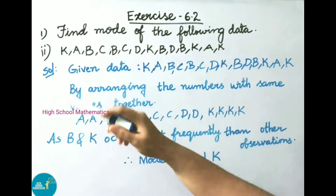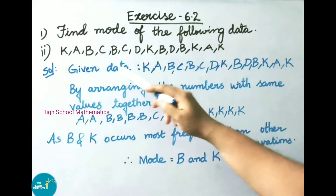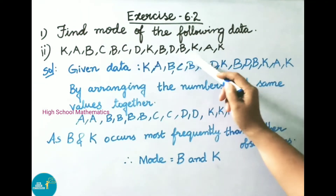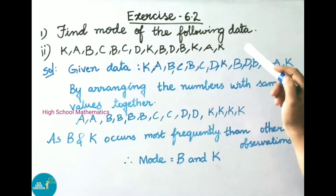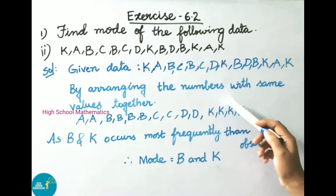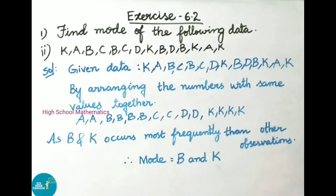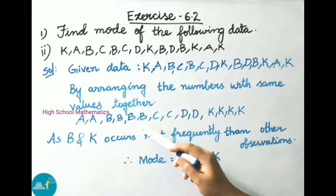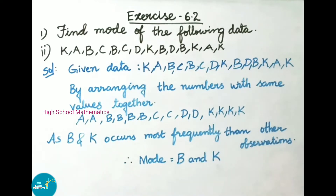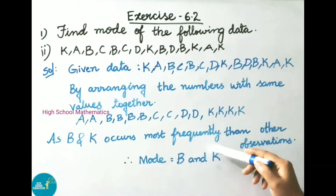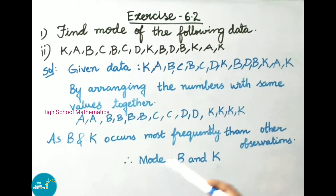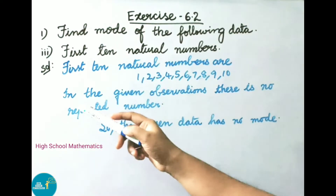Question 1, part two: Find the mode of K, A, B, C, B, C, D, K, B, D, B, K, A, K. Arranging letters of the same type together: A appears 2 times, B appears 4 times, C appears 2 times, D appears 2 times, and K appears 4 times. Since B and K both occur most frequently, mode equals B and K.